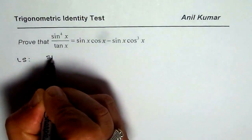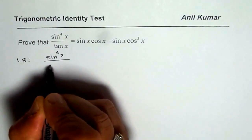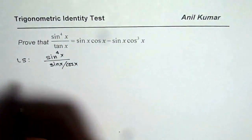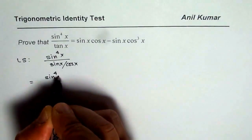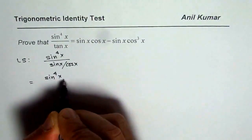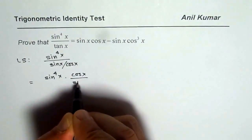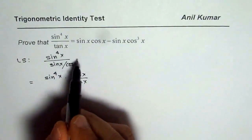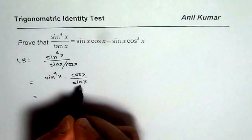We have sin to the power of 4x divided by tan x which is sin x divided by cos x. So I could write this as sin to the power of 4x times cos x over sin x. When you are dividing by sin x over cos x, you can multiply by cos x over sin x.